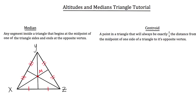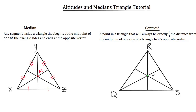Now let's draw the centroid in a triangle. I'm going to draw a triangle and label it triangle QRS. I've already drawn in the medians on triangle QRS and also drawn in the centroid — the place where all three medians meet — labeled as point P right here in the triangle.